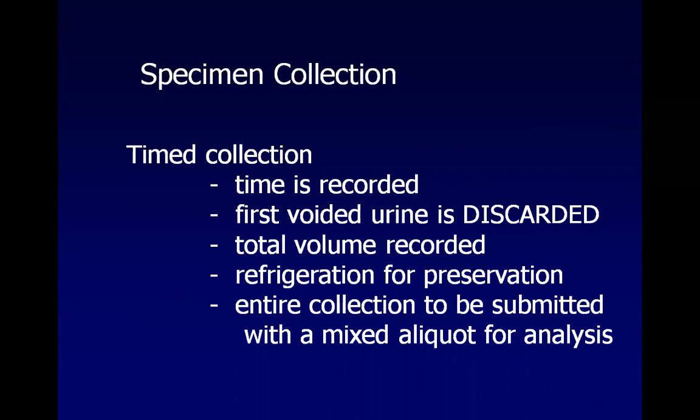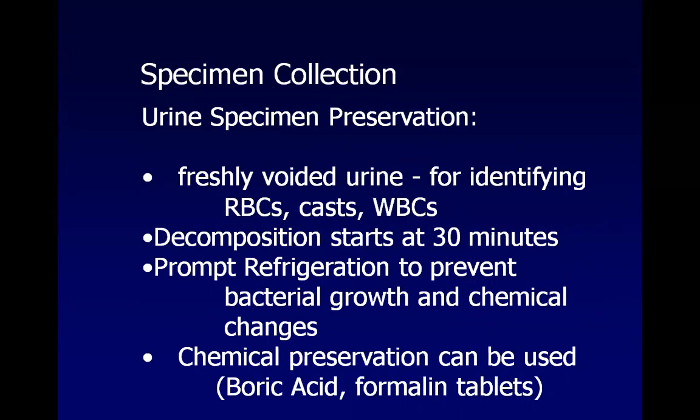Timed collections are used for patients with renal problems. The first voided urine is always discarded. For a 24-hour urine collection, it starts at 8 AM and ends at 8 AM the following day. The total volume is recorded, specimens are preserved through refrigeration, and the entire collection should be submitted the following day with a mixed aliquot for analysis.